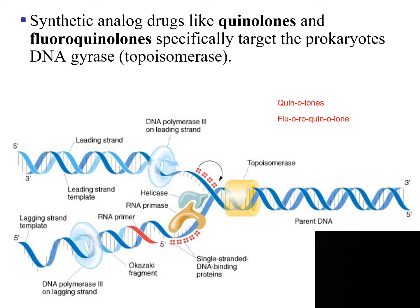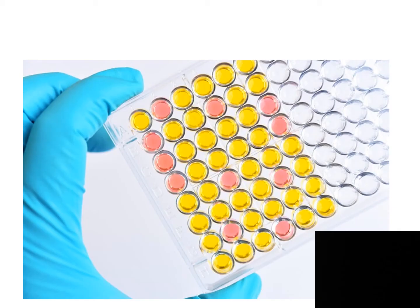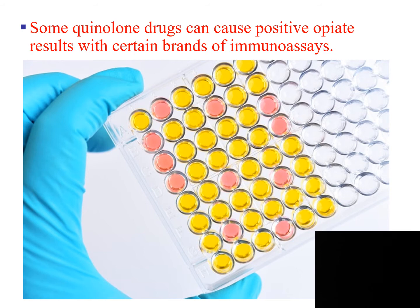If topoisomerase is inhibited, then the supercoil will occur and DNA replication will no longer happen. An example of fluoroquinolones is this drug. Some quinolone drugs can cause positive opiate results when using certain brands of these immunoassays called ELISA kits.